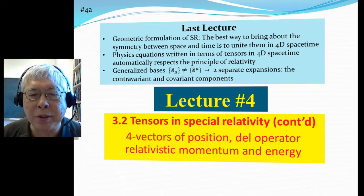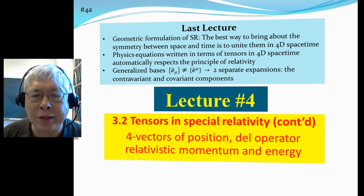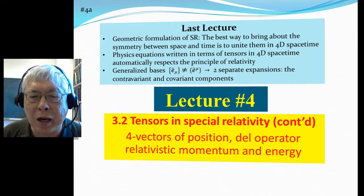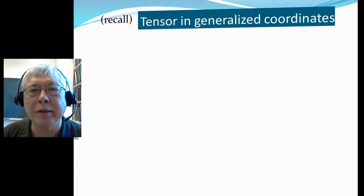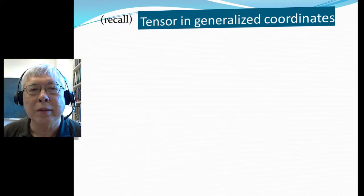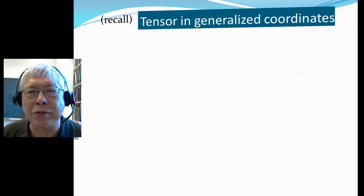In particular, we're going to talk about four-vectors: the four-dimensional vector of position, the del operator, and the relativistic momentum and energy. Let's recall what we talked about last time — tensors in generalized coordinates.